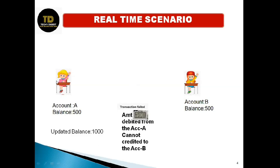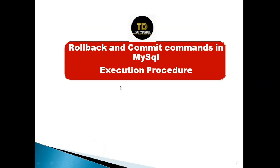If it is an unsuccessful transaction, the transaction process will be rolled back. That is, the 500 rupees debited from account A is again credited back to account A. Now, let's move on to how to execute rollback and commit commands in MySQL — that is, the execution procedure.